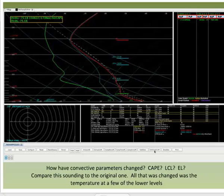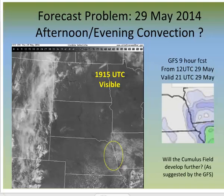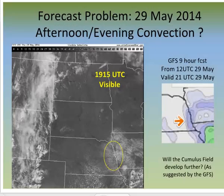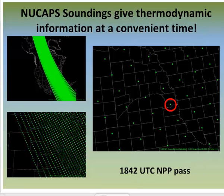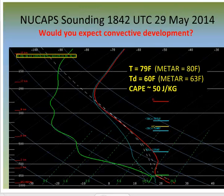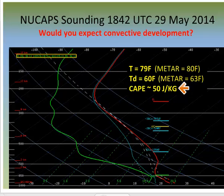Compare the edited sounding to the original — convection-related parameters such as MU-CAPE will have changed. For a more forecast-specific use: will that broken cumulus field on the border of Iowa and Nebraska develop into convection? The GFS is predicting QPF for later in the day. Suomi-NPP overflies the central United States around 18 or 19Z, providing timely information on the state of the atmosphere in early afternoon. The sounding in eastern Nebraska has a surface temperature and dew point close to observations, so it needn't be edited. The CAPE is small — and convection did not occur.